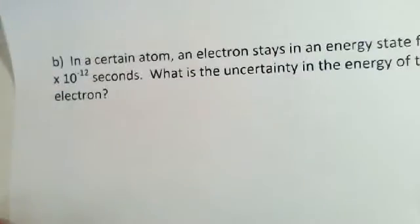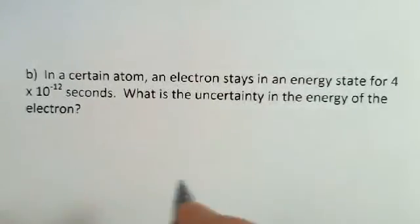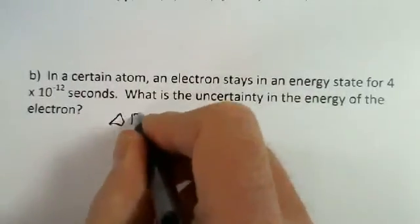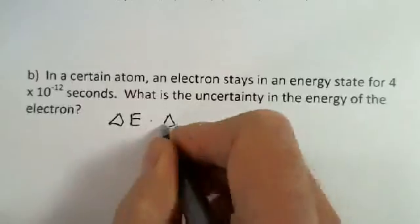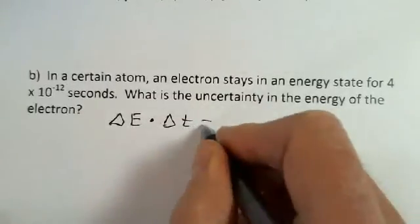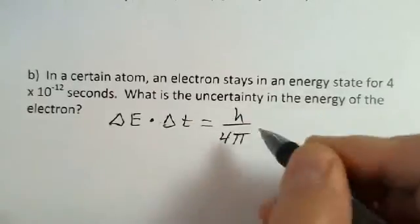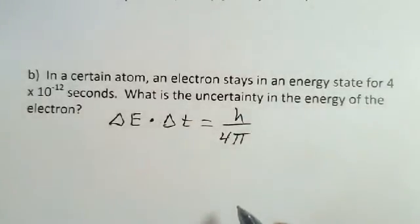But the other uncertainty principle deals with energy and time. And the relationship is the uncertainty in the energy multiplied by the length of the time interval where we measure that energy. Again, it's greater than or equal. We'll just use the equal portion to give us our smallest uncertainty in the energy, h over 4 pi.